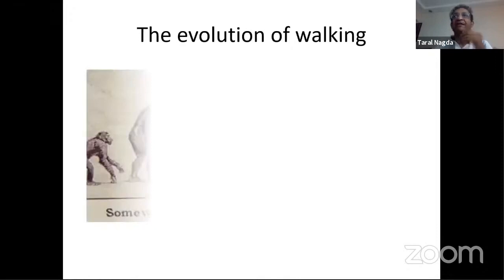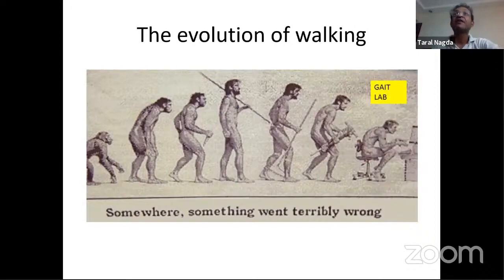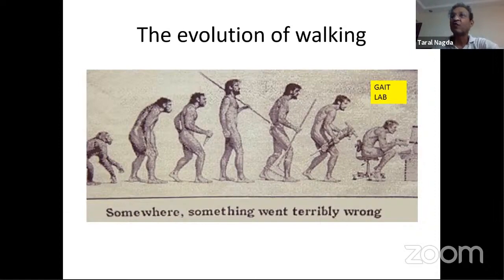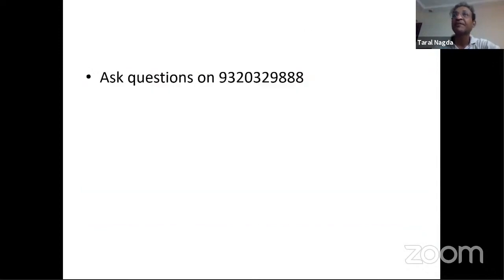Let's begin. The whole issue about cerebral palsy is about walking. When parents come to us with a child who's not able to walk by 18 months of age, the first question is: when will my child walk? The main complaint is 'doctor, my child is not walking properly.' Therapists use stretching exercises and strengthening to make the child stand and walk better, and most surgeries in cerebral palsy are to make the child walk better. Walking is a very important part of cerebral palsy.